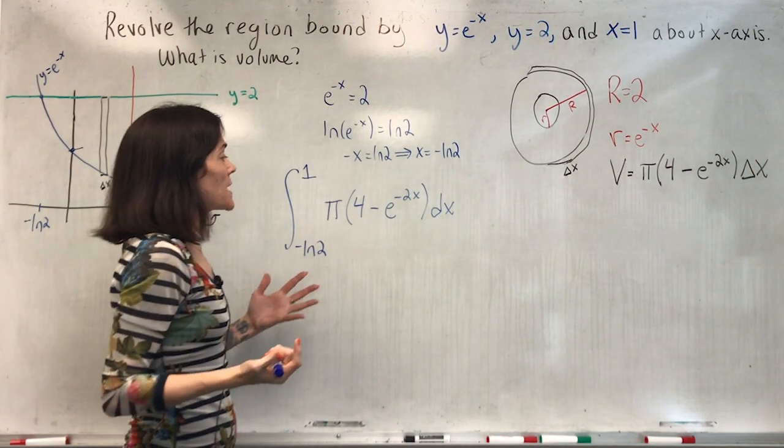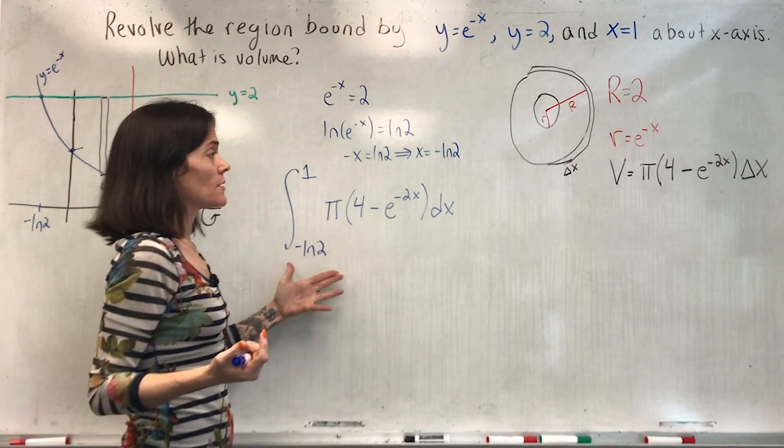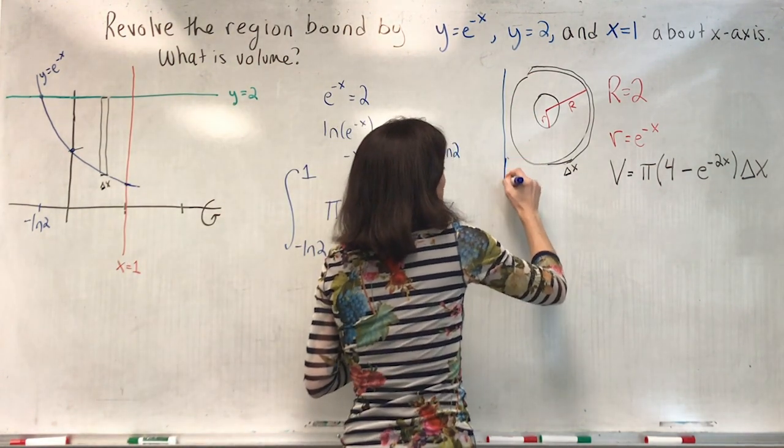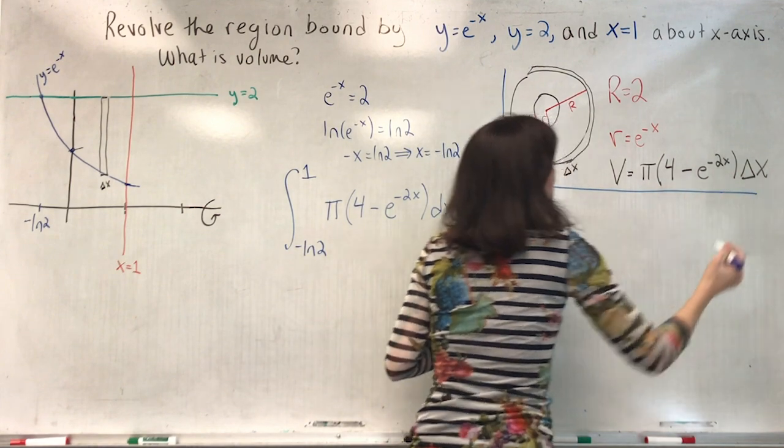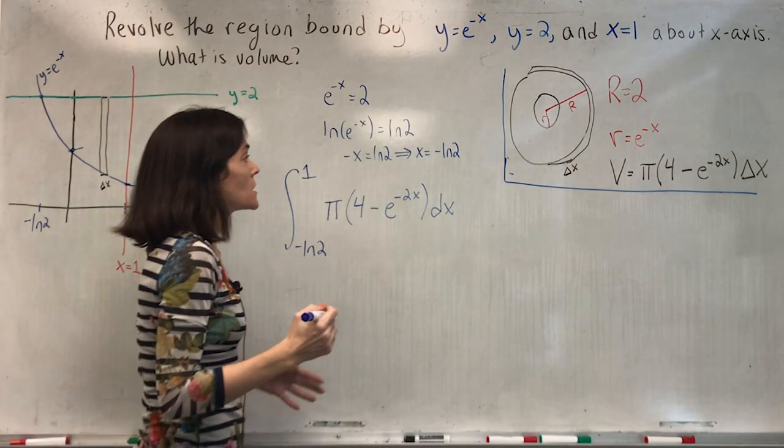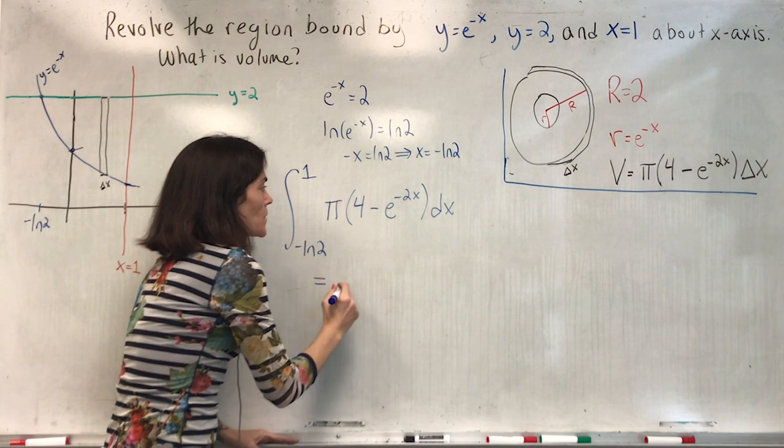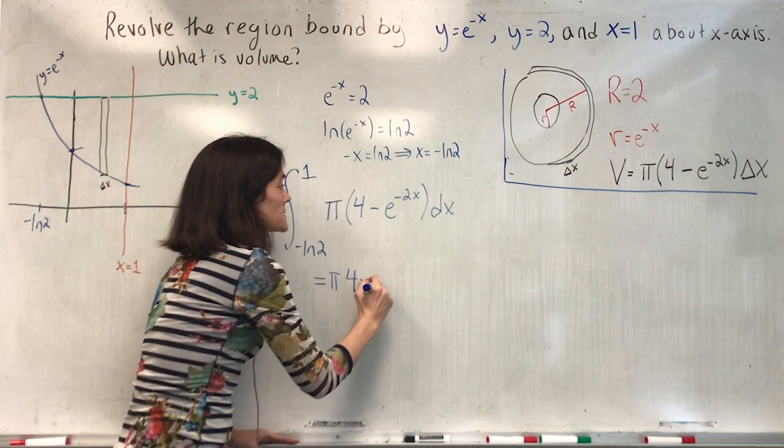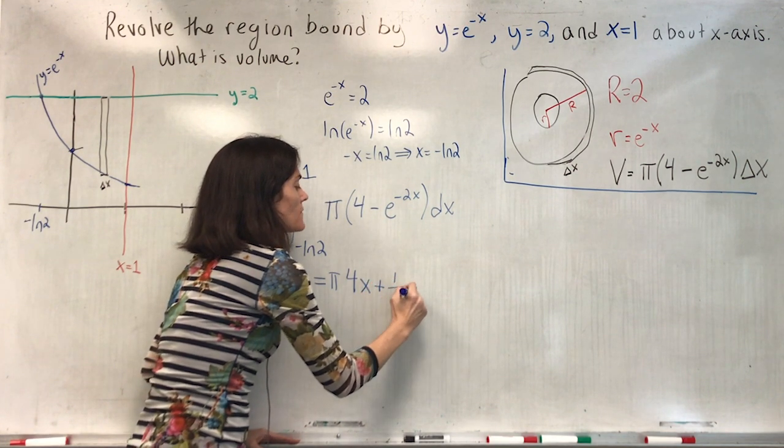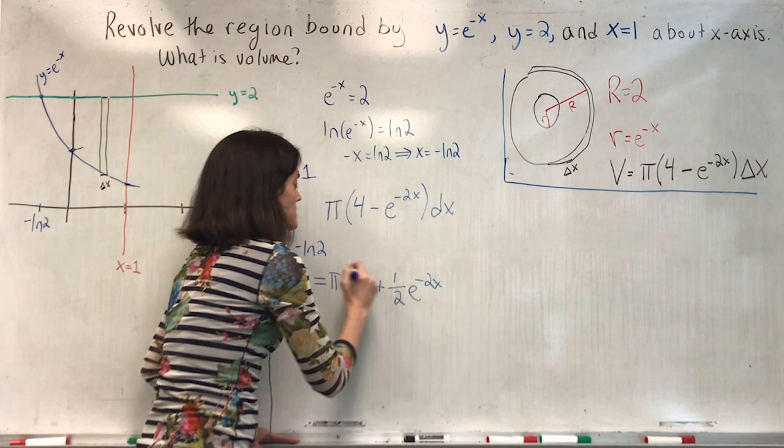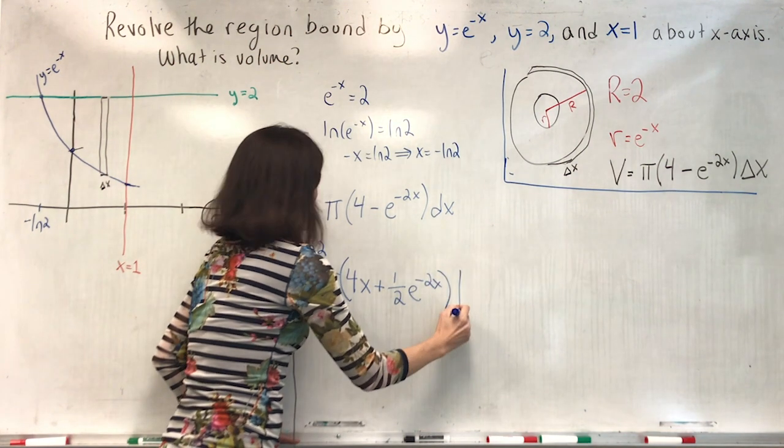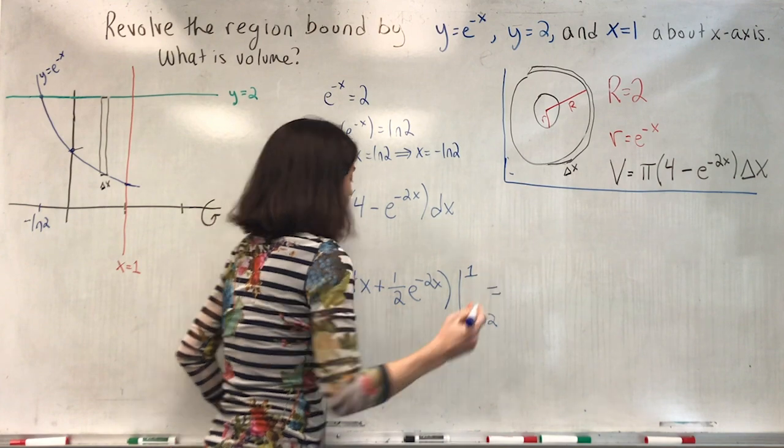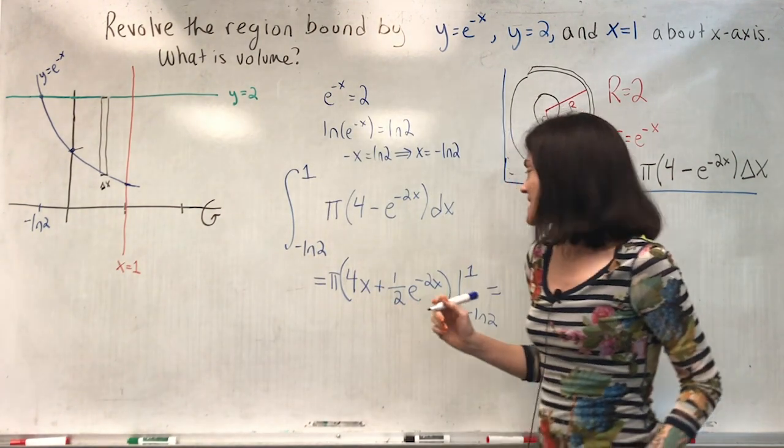Now let's integrate, because this integral is calculating our volume. Maybe I will put this in a box. This was thinking about the washer. We have pi, and then we have 4x. This is going to be plus 1 half e to the minus 2x. And we evaluate between negative ln 2 and 1. This is not too hard to integrate.